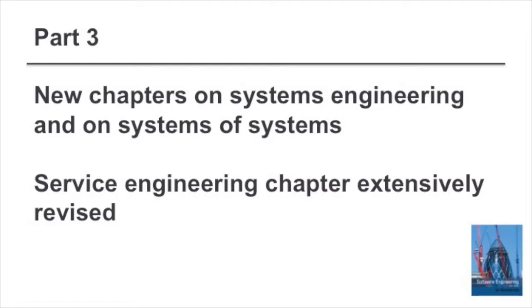In part three, advanced software engineering, I've introduced two new chapters: one on systems engineering and one on systems of systems. These are driven by complexity. I talk about complexity in these chapters and I talk about the relationships between systems and software engineering. I've also dropped aspect-oriented software engineering from this part. Aspect-oriented software engineering is something that had a lot of potential which hasn't really been realised. It's still available as an electronic chapter.